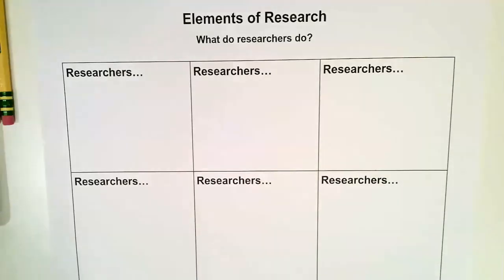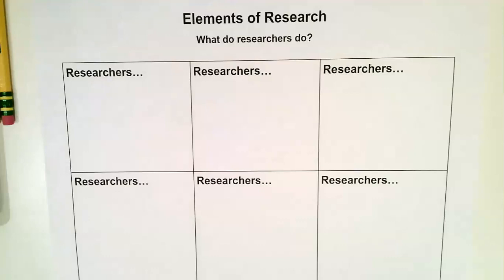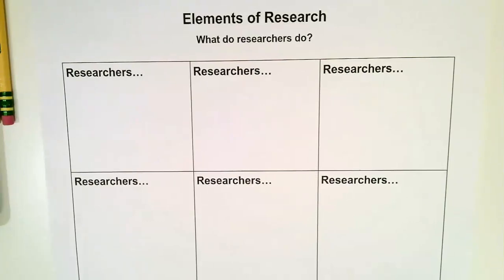For the next two weeks, we are going to be doing a unit on animal research for our writing — an animal research project. The first thing we're going to do is talk about research. So what is research? What do researchers do? Research is where you have a certain topic and you're researching things about that topic. We're going to think of ourselves as researchers.